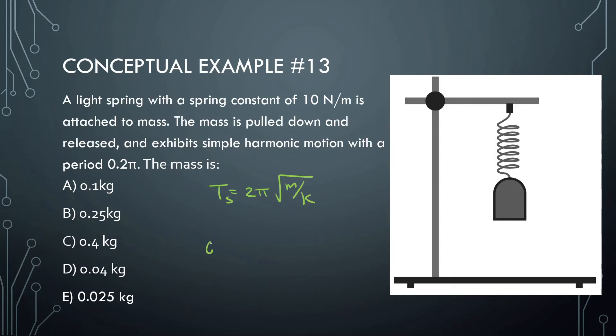We know the period is equal to 0.2π. It's going to be equal to 2π square root of mass, which we don't know, that's what we're looking for, and square root of k, which is 10. Okay, first thing, right off the bat, the π cancels out, 0.2 divided by 2, and we get 0.1. So 0.1 is equal to square root of m over 10. Square that, and multiply by 10, and we get 0.1 kilograms.